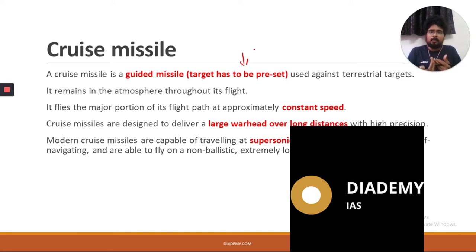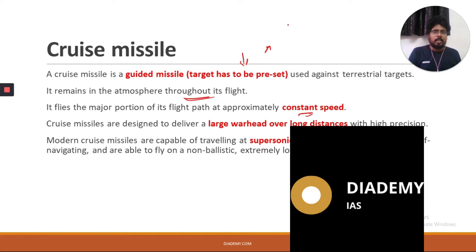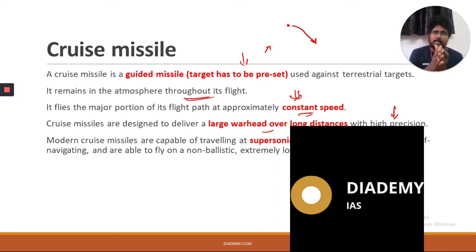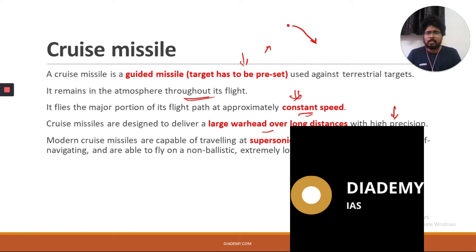A cruise missile is used against terrestrial targets and remains mostly within the atmosphere throughout its flight. It flies the major portion of its path at a constant speed. In a ballistic missile, speed varies — initial velocity is high, becomes zero at peak, and increases again on descent. But a cruise missile, being a vehicle itself, maintains an almost constant speed throughout its journey. It uses satellite and radar information and is very precise.